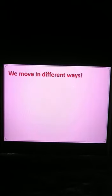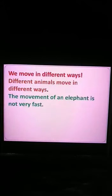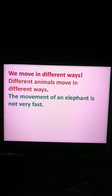In the fourth topic, we learned that animals move in different ways — that is, the movement of different animals is different. Different animals move in different ways. The movement of an elephant is not very fast, because an elephant has a large body.